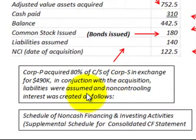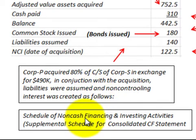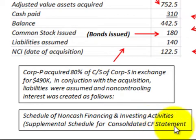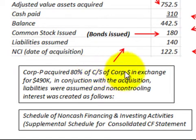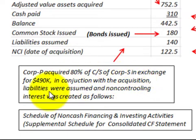Looking at the disclosure required for consolidated financial statements, parent corporation P is buying subsidiary corporation S. We would have a schedule for non-cash financing and investing activities as a supplemental schedule to the consolidated financial statements. The first item to be stated is that corporation P acquires 80% of the common stock of corporation S in exchange for $490,000.